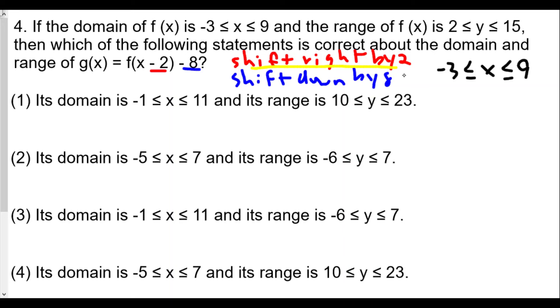We'll add 2 here and add 2 here, which gives us our domain to be -1 ≤ x ≤ 11.